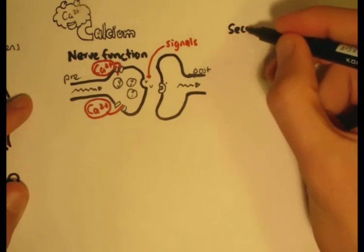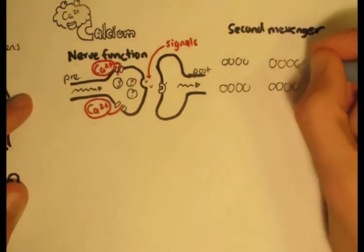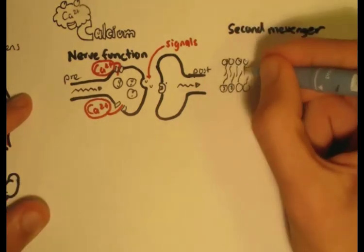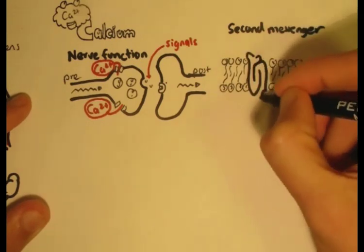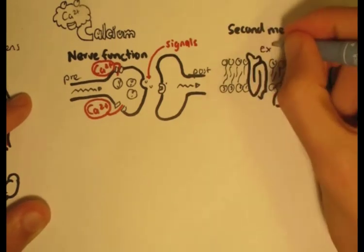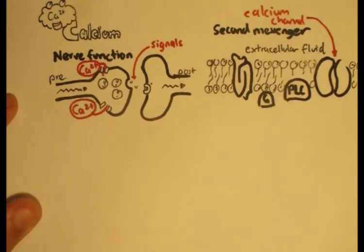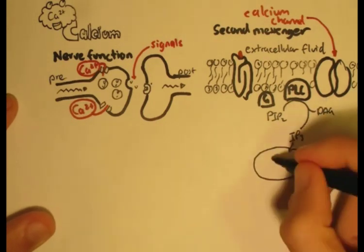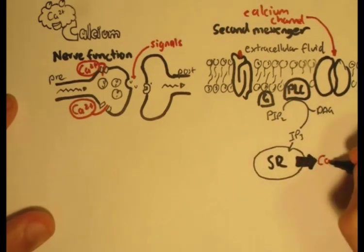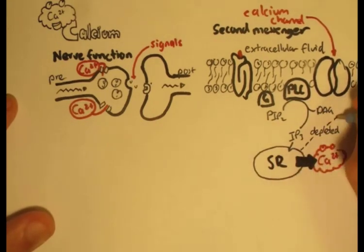Calcium is also a second messenger. When a G protein is activated, some affected proteins target the sarcoplasmic reticulum. When this occurs, the sarcoplasmic reticulum secretes calcium. And if supplies are depleted, it sends signals to the calcium channels to send in more calcium, an influx of calcium.